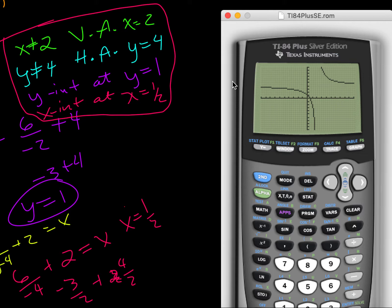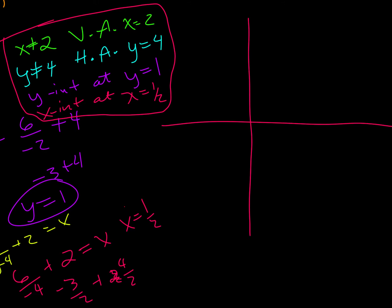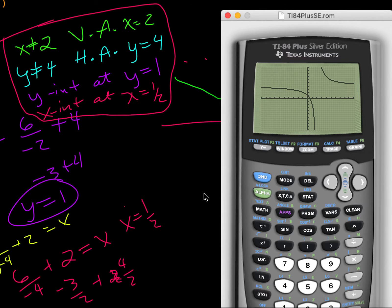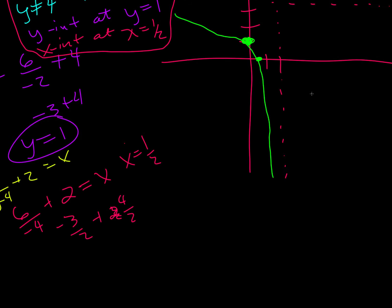And then we have a y-intercept at 1 — that looks true. And we have an x-intercept at 1 half — that also looks true. So when we're trying to sketch this, we draw our axes, then draw the asymptote at x equals 2 and y equals 4. We cross at 1 on the y-axis and 1 half on the x. And you can see it's not perfect, but it looks pretty close to what was on the graphing calculator.